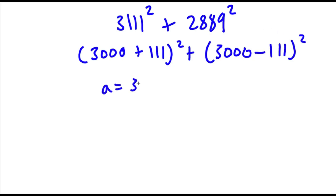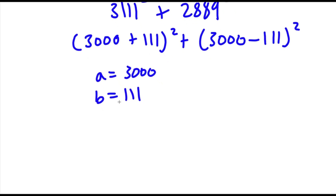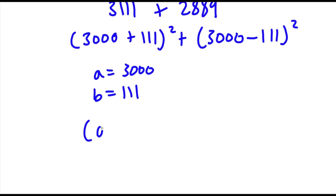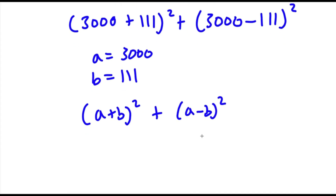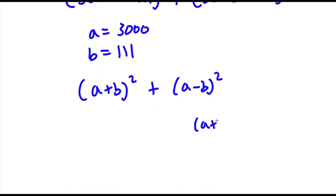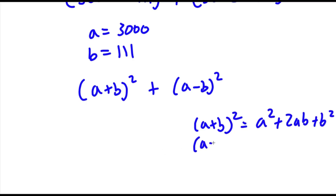Now I'm going to set a equal to 3,000 and b equal to 111. So if I substitute these in, I get (a plus b) squared plus (a minus b) squared. Now, (a plus b) squared equals a squared plus 2ab plus b squared, and (a minus b) squared equals a squared minus 2ab plus b squared.